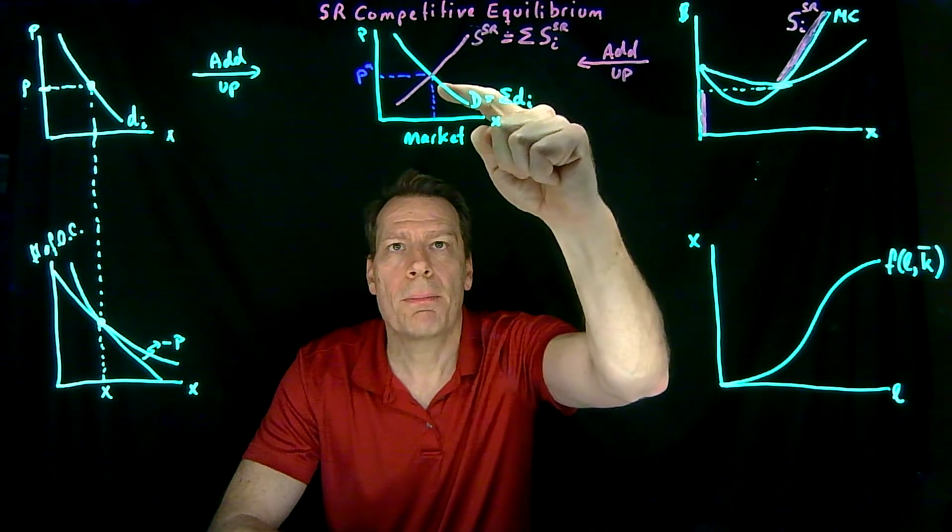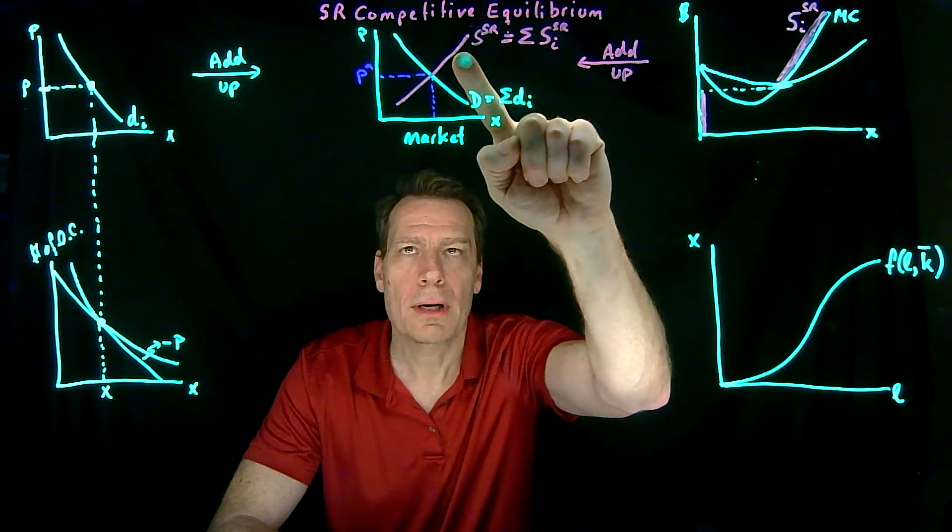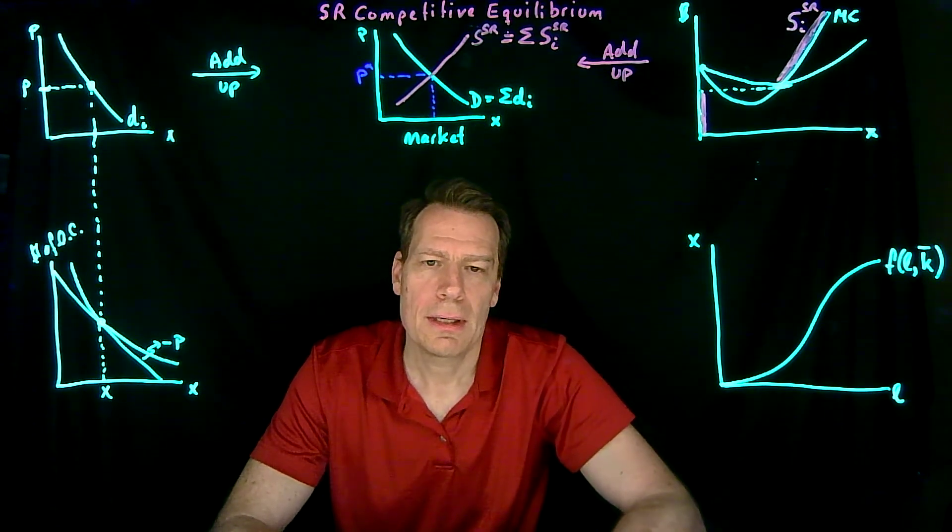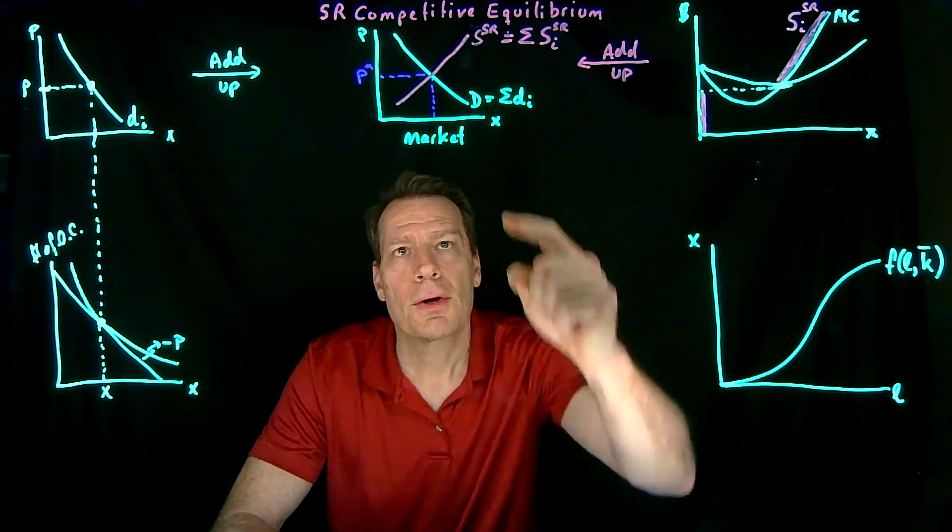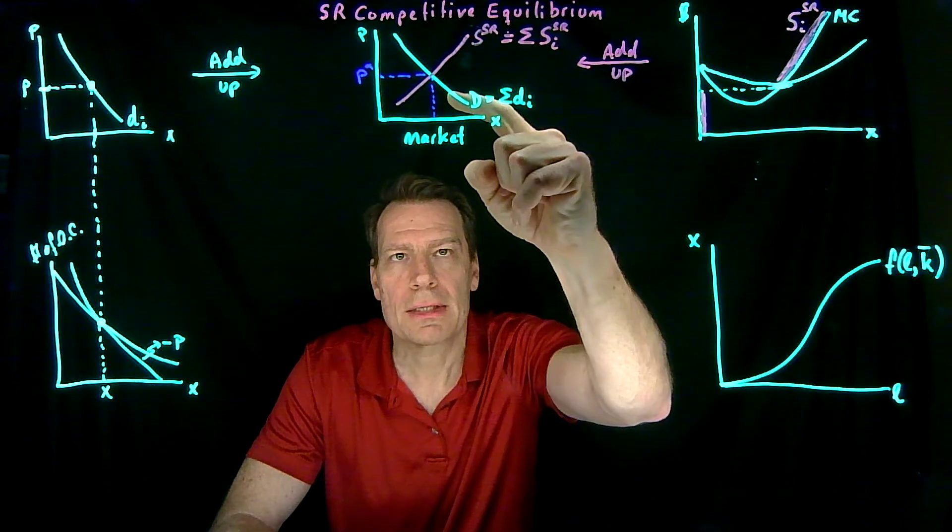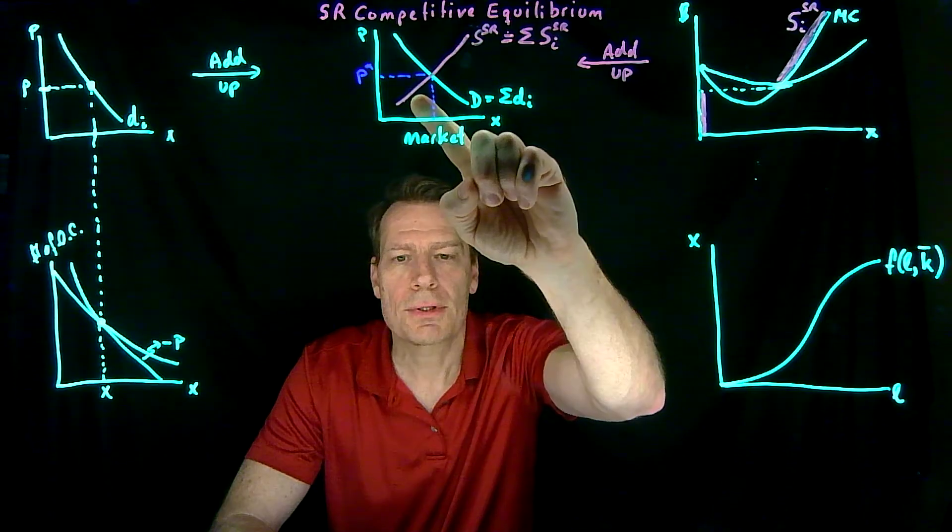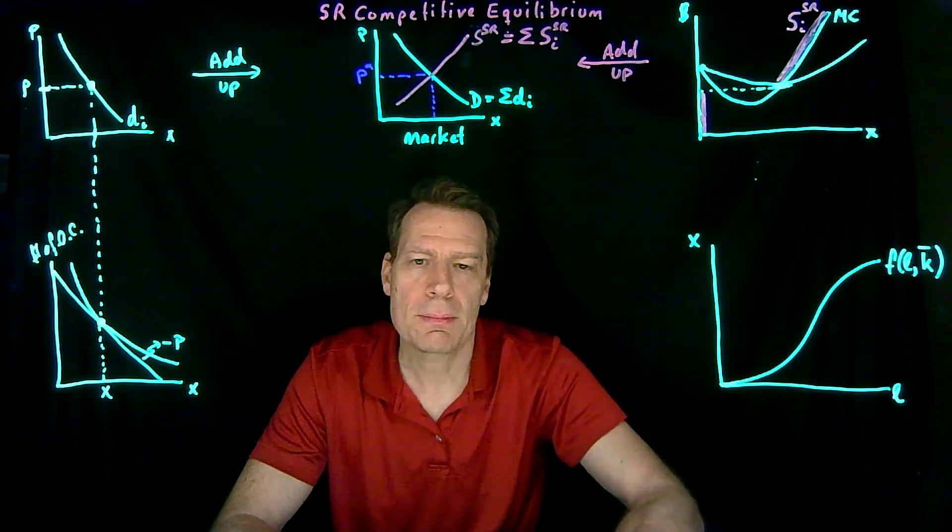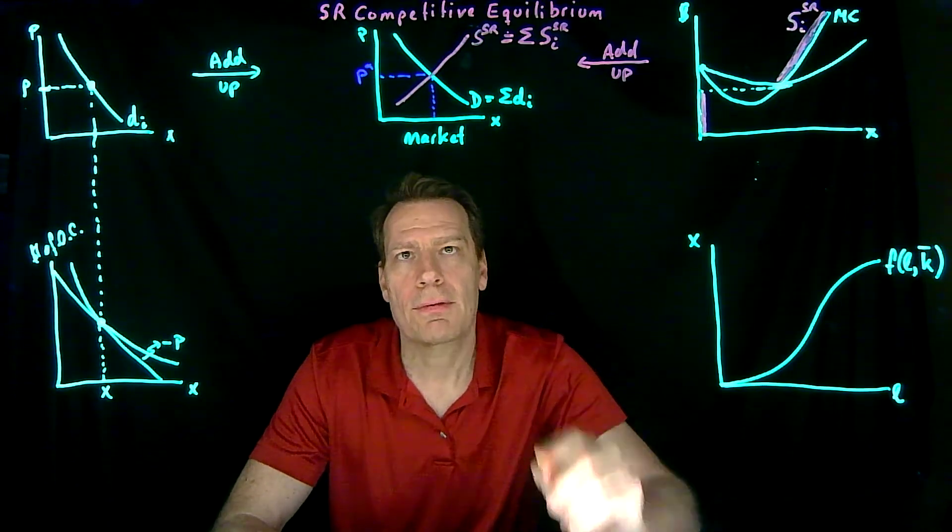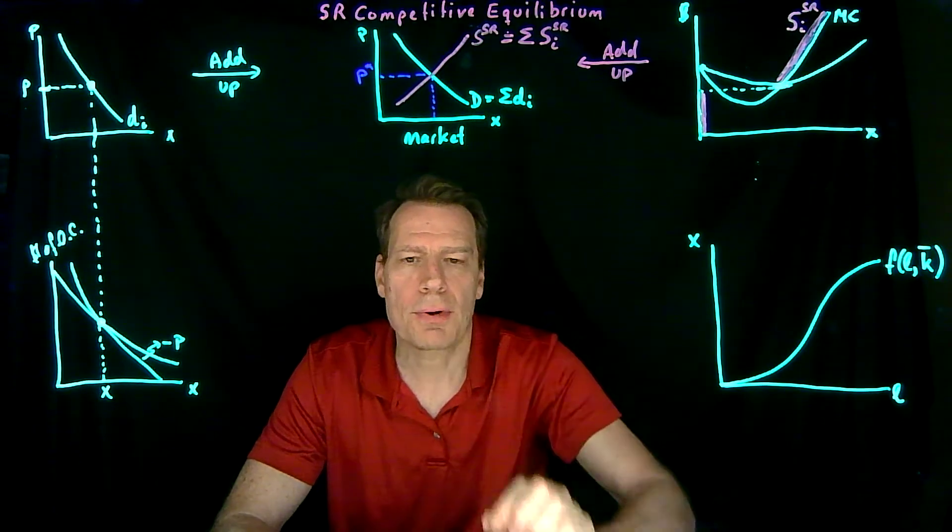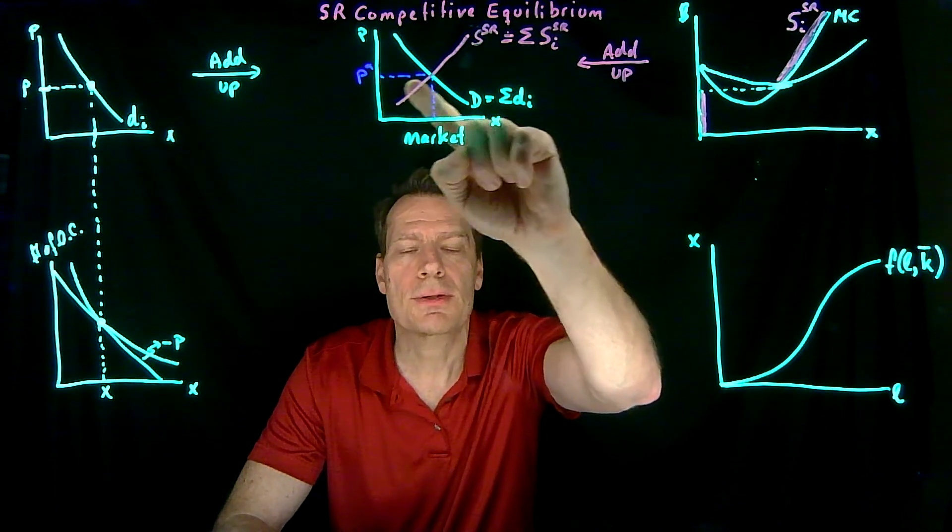If the price is ever above that equilibrium price in the short run, then producers are producing more than consumers want. And producers will be stuck with inventory that they can't get rid of. So that will put downward pressure on price. If the price is ever below the equilibrium price, then producers are producing less than what consumers demand. And so firms realize they can raise the price and still sell everything that they have. So that would put upward pressure on price. So there are forces in place in that market that drive price to this equilibrium.